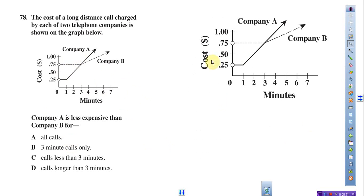I've made it bigger so we can see it. The cost of a long-distance call charged by each of two telephone companies is shown in the graph below. Here's our graph, and it says Company A is less expensive than Company B for—and then we have options.